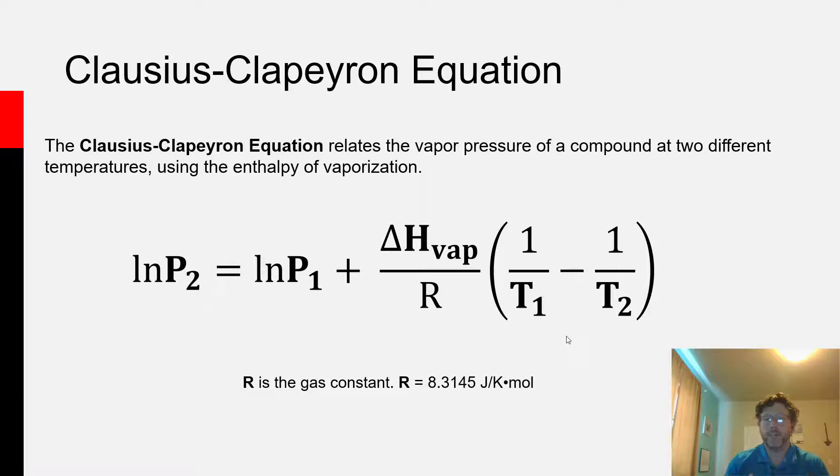You can actually find the vapor pressure of a liquid at any given temperature without using a graph like what I just showed, by using the equation form of the Clausius-Clapeyron equation, which says that the natural log of the vapor pressure of the liquid at a specific temperature P_2...